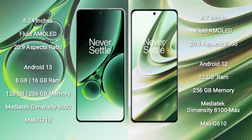OnePlus Nord 3 comes with 8GB or 16GB RAM and 128GB or 256GB internal storage, a MediaTek Dimensity 9000 processor, and GPU Mali-G710. OnePlus 10R comes with 12GB RAM and 256GB internal storage, a MediaTek Dimensity 8100 Max processor, and GPU Mali-G610.